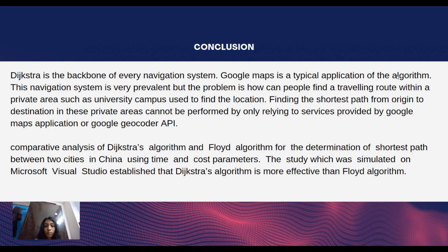Finally, Dijkstra's algorithm is the backbone of every navigation system — even Google Maps is a typical application of this algorithm. This navigation system is very prevalent and helps people find the shortest path from one point to another, such as within a university campus. Finding the shortest path from origin to destination cannot be performed by all available services, and this algorithm optimizes routes in a place so the user can get the shortest route from point to point.